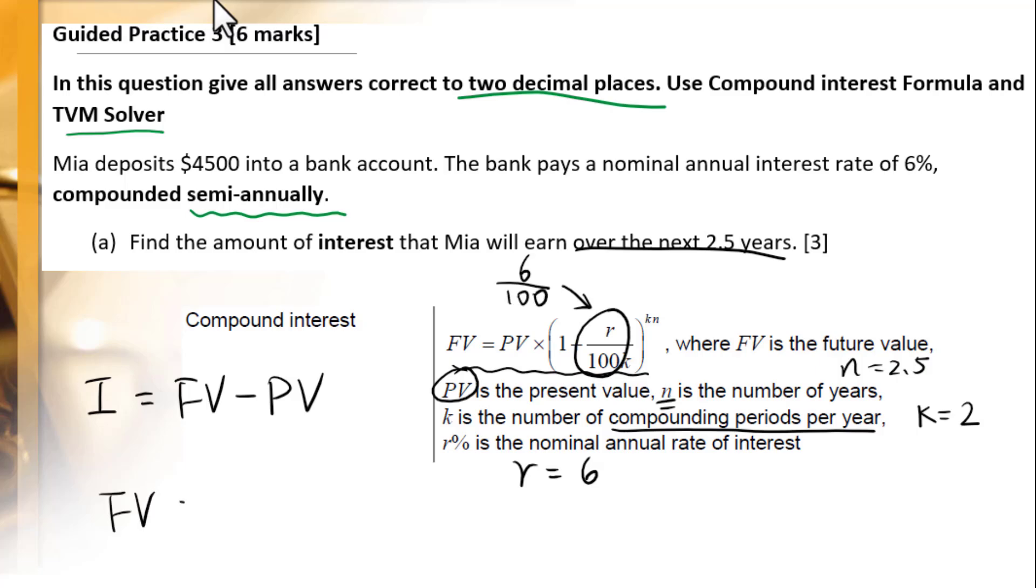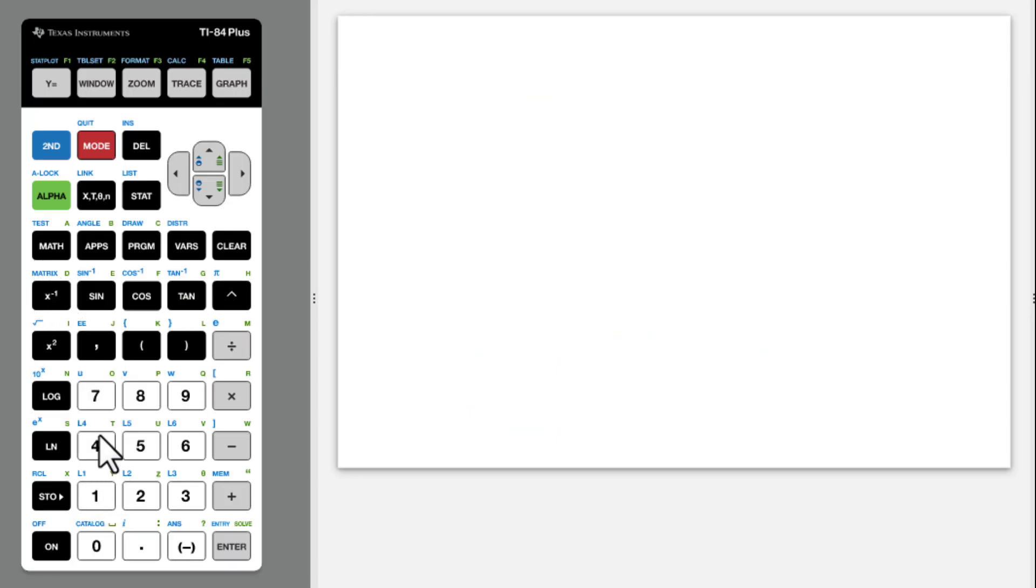FV equals 4500 times 1 plus 6 over 100 times 2, then 2 times 2.5. Go to 4500.